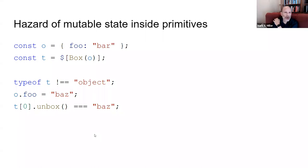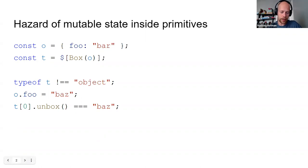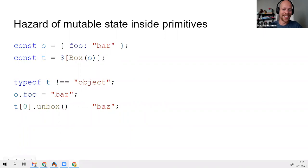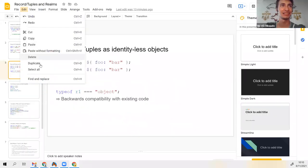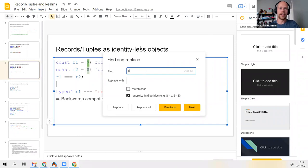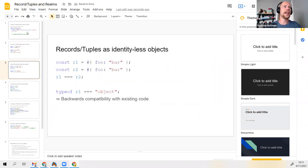Someone asks about the notation: what does dollar-open-square-bracket mean on the second line? Mathieu realizes he used the wrong notation for records and tuples — it should be hash, not dollar. He does a find-and-replace-all to fix it throughout the slides.